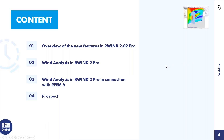To the agenda today: first, Stefan will give an overview of the new features in R-WIND 2.02 PRO. Then he will do a wind analysis in R-WIND PRO without using R-FEM 6. Then in the next step, a wind analysis in R-WIND PRO in connection with R-FEM 6. And he will give a prospect of what is scheduled to be integrated in R-WIND in the future.